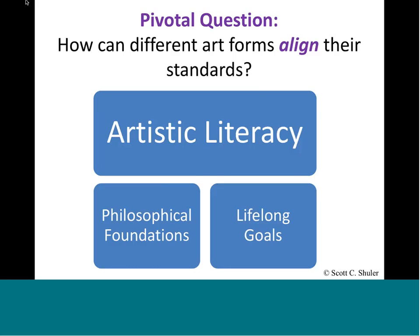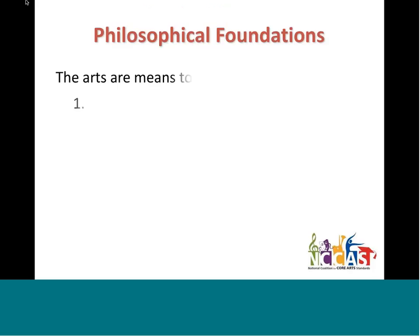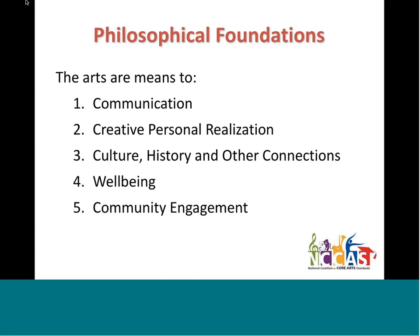When we talked about alignment among the five art forms, we agreed that the overall umbrella was artistic literacy — not just reading notation, but being able to communicate and understand the communications of others in the arts. We developed a set of artistic philosophical foundations and lifelong goals. The arts are means to: communication, creative personal realization, culture and history and other connections, well-being, and community engagement.